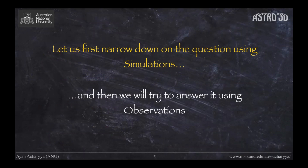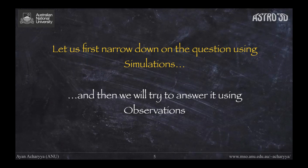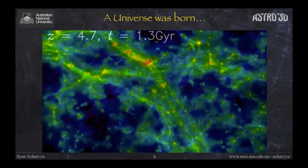I mentioned I look for building blocks of life — elements like carbon and oxygen. In science it is important to ask the right questions precisely. So: what is the big question we are trying to answer? We are trying to understand how galaxies grow and change over time. We need to narrow this down, so let's briefly take the help of simulations and then delve into the world of observations.